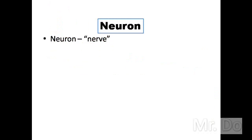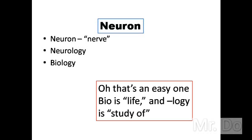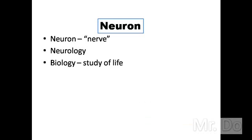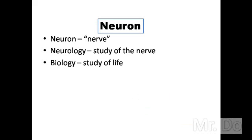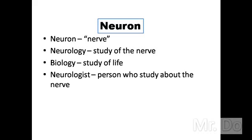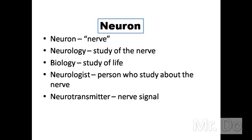Neuron is Latin for nerve. So can you guess what neurology is? Neurology — okay, so let's assume you don't know. Bio means life and logi means the study of, so biology is the study of life. Then neurology is the study of the nerve, and a neurologist is a person who studies nerves. What about neurotransmitter? A neurotransmitter is a nerve signal. And a neurosurgeon is a surgeon who works on the brain.